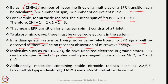Molecules such as NO, NO₂, and O₂ do have unpaired electrons in the ground state. EPR can also be performed on proteins with paramagnetic ions such as Mn²⁺, Fe³⁺, and Co²⁺, and other relevant transition metal ions. Additionally, molecules containing stable nitroxide radicals such as TEMPO (2,2,6,6-tetramethyl-1-piperidinyloxyl) and di-tert-butyl nitroxide radical are suitable.